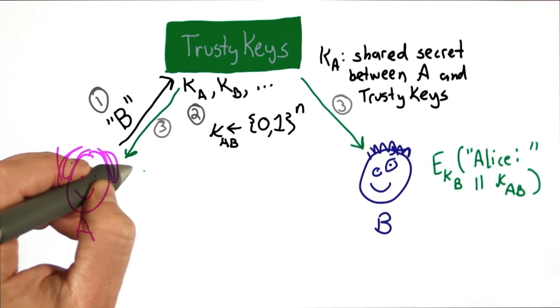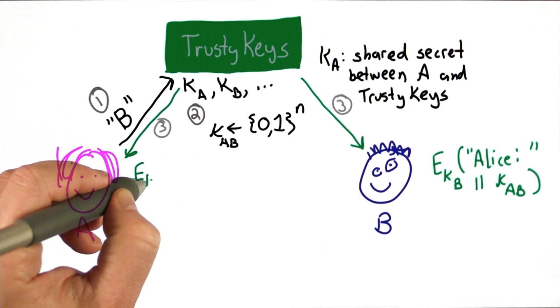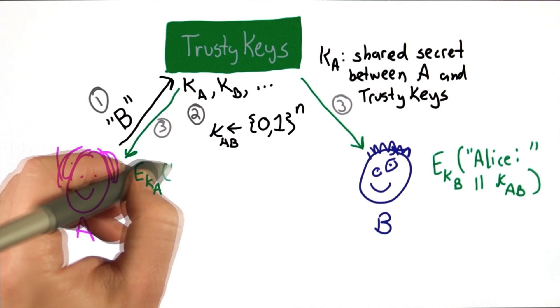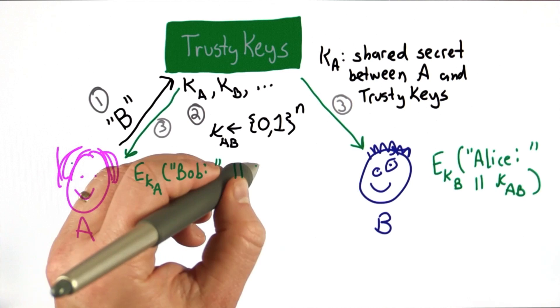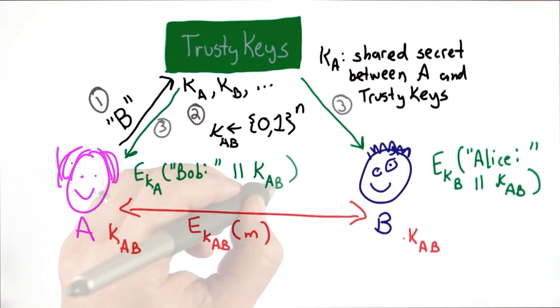And what gets sent to Alice is encrypted with KA, the shared key between Alice and TrustyKeys, and the name Bob along with KAB. At this point, both Alice and Bob know KAB, and can communicate securely using KAB to encrypt messages between them.